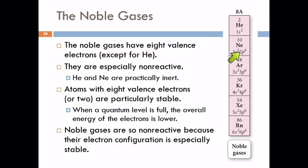And neon now, the second level is its highest level. It's completely full. It's got eight electrons. So what we find is that these noble gases, because they have eight electrons, they're very, very stable. When this quantum level is full, the overall electron energy is lower.